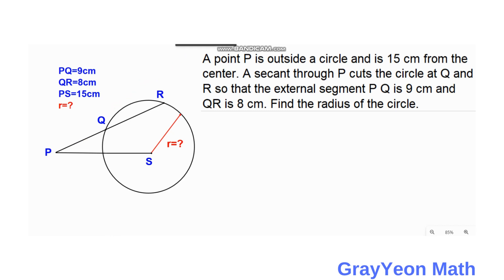First thing we have to do is label the segments. For this problem, from P to the center is 15 centimeters, segment PQ is 9 cm, and QR is 8 centimeters. We are asked to find the radius.